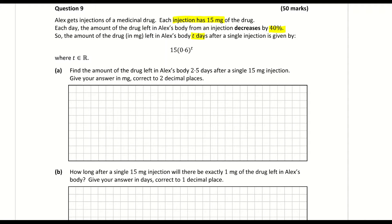Part A: Find the amount of drug left in Alex's body two and a half days after a single 15 milligram injection, correct to two decimal places. We're substituting 2.5 in for t. Taking the function 15 multiplied by 0.6 to the power of t and subbing in 2.5, I get 4.1823, which to two decimal places is 4.18 milligrams.